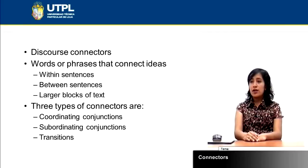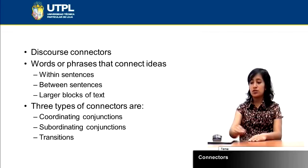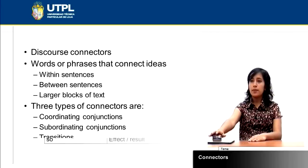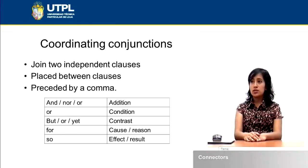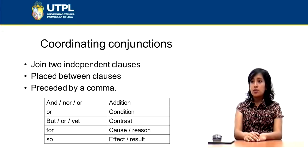There are three types of connectors: coordinating conjunctions, subordinating conjunctions, and transitions. Coordinating conjunctions join two independent clauses. They come between clauses and are always preceded by a comma.